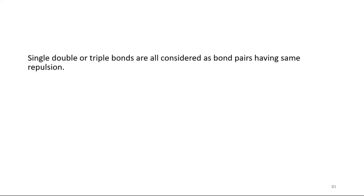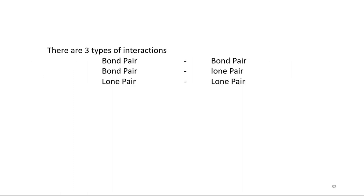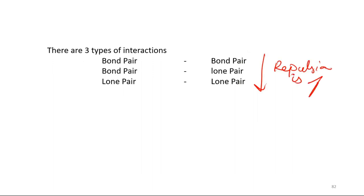Single, double, or triple bonds are all considered as bond pairs having the same repulsion. There are three types of interactions: bond pair–bond pair, lone pair–bond pair, and lone pair–lone pair — and repulsion increases in that order.